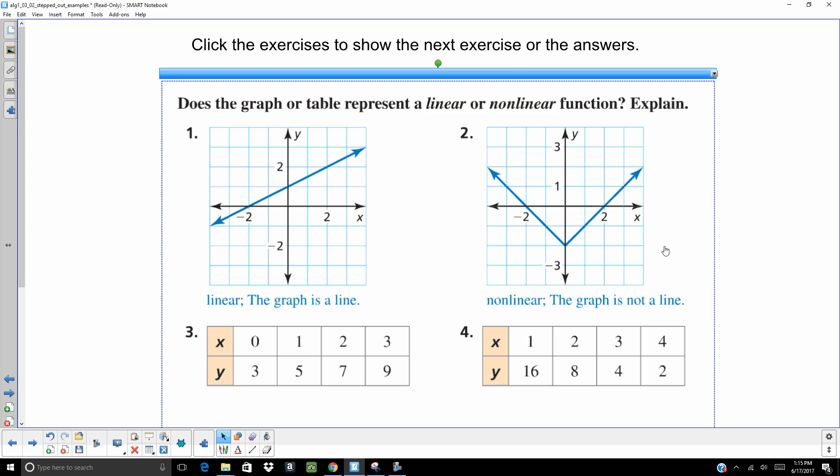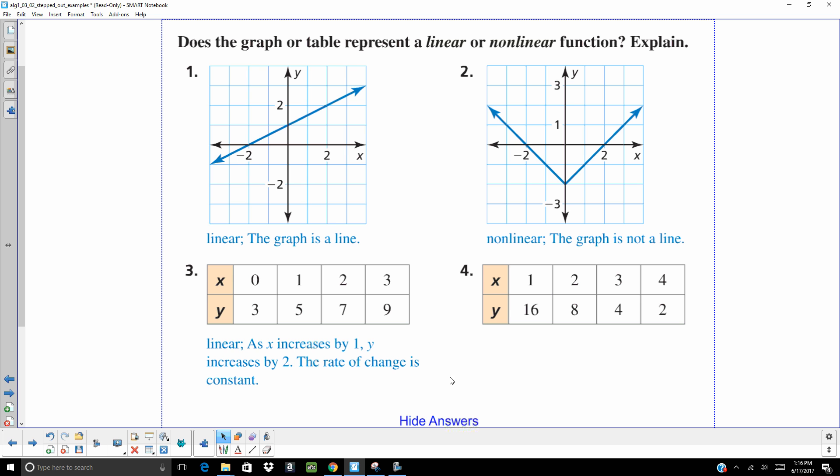Of course, that's a line. No, that's got two lines. That's not linear. The rate of change is constant. It is linear. No. As X increases by one, Y decreases by different amounts. Not linear.